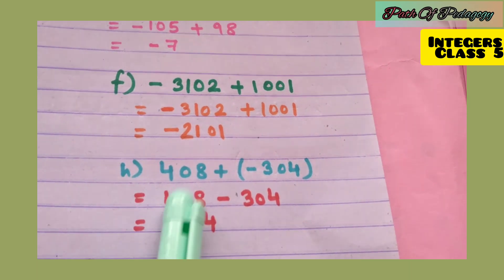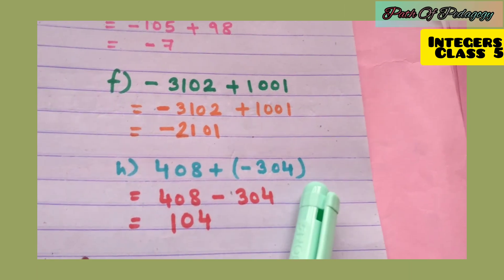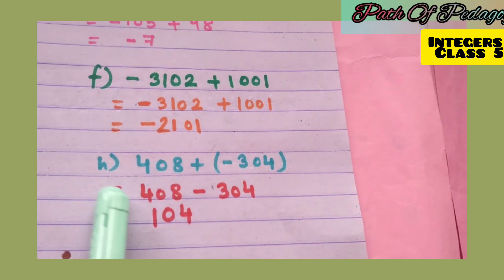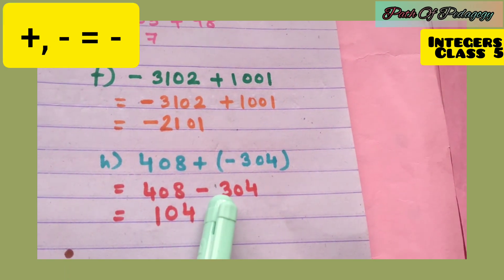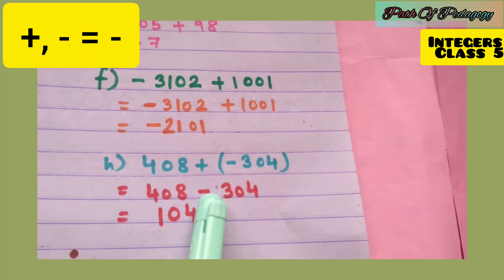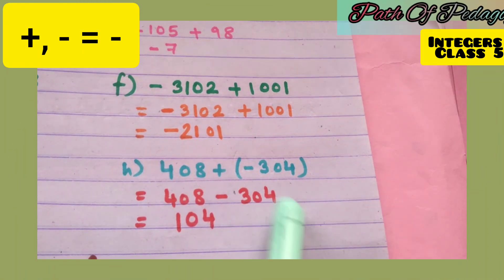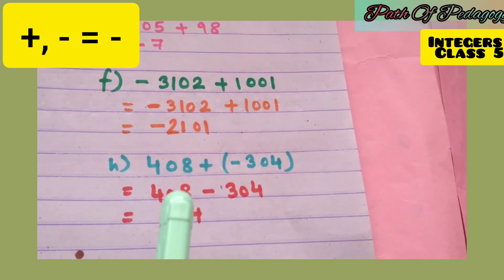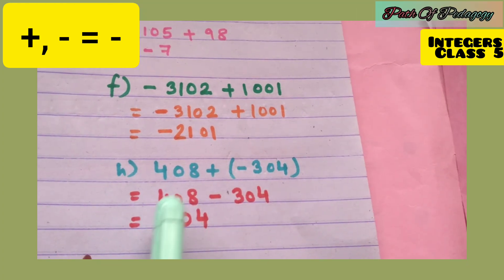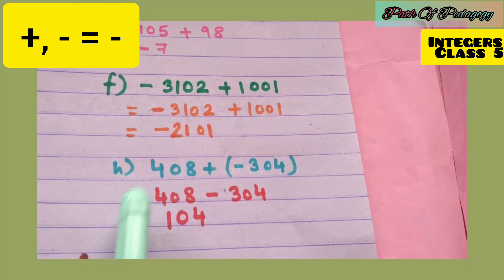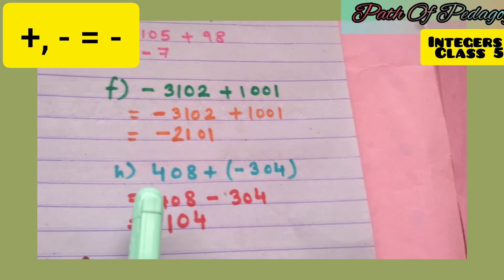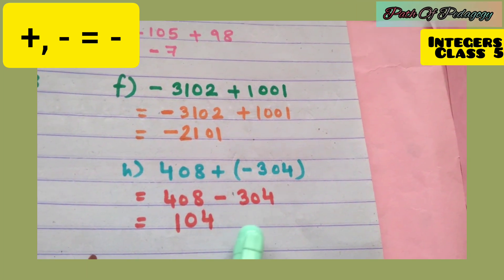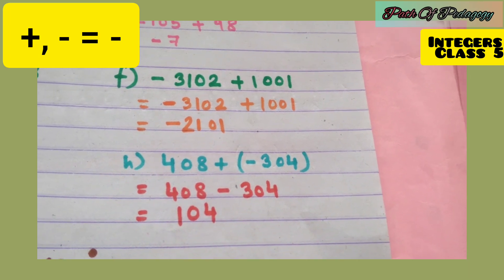Question h: 408 + (−304). Remove the bracket: 408 + (−304). Plus minus is always minus, so we subtract: 408 − 304 = 104. The bigger number is 408 with a plus sign, so the answer is positive — 104.